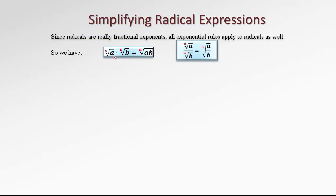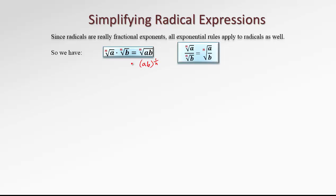Here they are. The product of two radicals of the same degree is a radical of a product. This property works both ways — from the product of radicals to the radical of a product, and the other way around we can separate the radical of nth degree into a product of radicals of each factor. This is because of the exponential rule that ab raised to a certain exponent, in this case 1 over n, can be written as a to this exponent and b to this exponent.